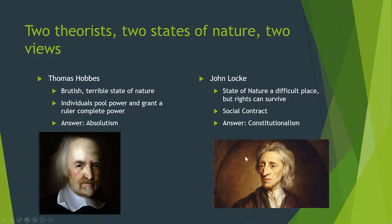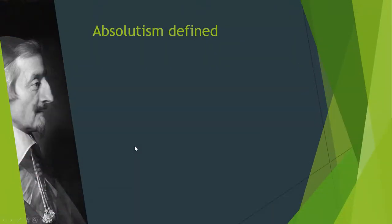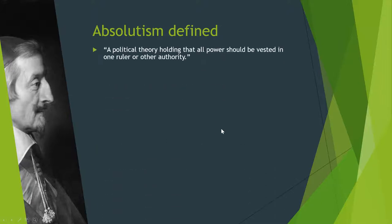So we have these two divergent thinkers, and they're going to relate to our two divergent political paths. You should be thinking about what human nature is. Hopefully you remember some of that from ninth grade. We'll cover absolutism first, and then we'll talk about constitutionalism second.